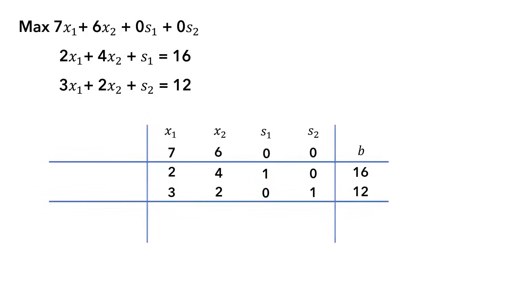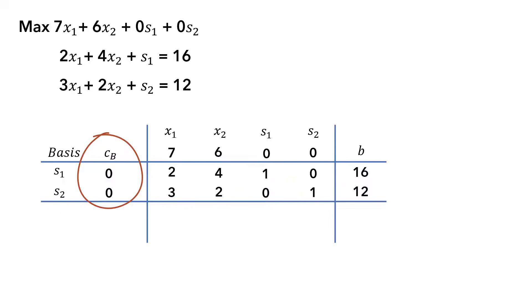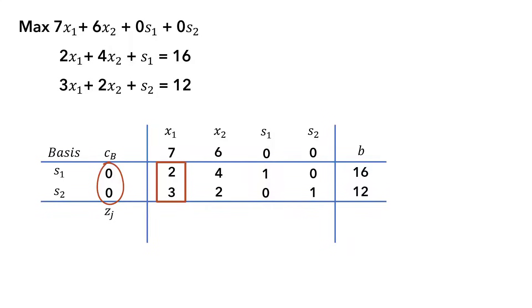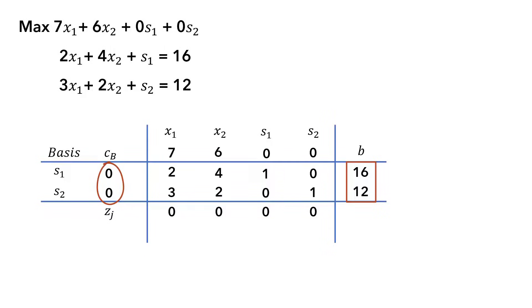Next, we place the basic variables in a column called the basis, and place the objective function coefficients next to them in a column we refer to as the cb column. This shows that the initial basic feasible solution is s1 equals 16 and s2 equals 12. Next, we introduce the zj row, whose values are calculated by multiplying the cb values by the corresponding column values and adding the results. So for x1, it will be 0 times 2 plus 0 times 3, which gives 0. For x2, 0 times 4 plus 0 times 2, which again is 0. It will be 0 for the rest as well, and our current objective function value will also be 0.